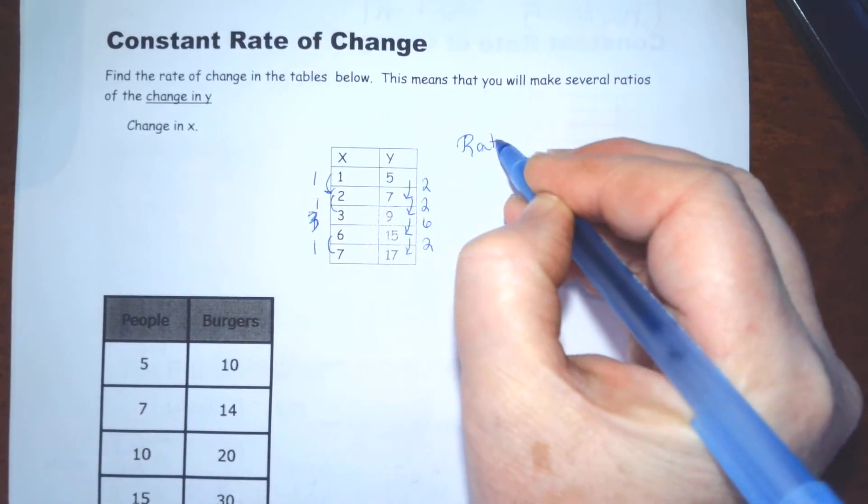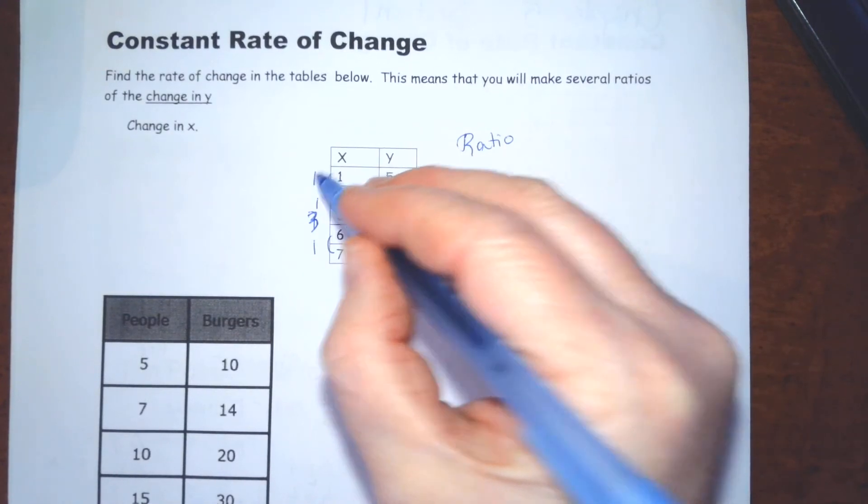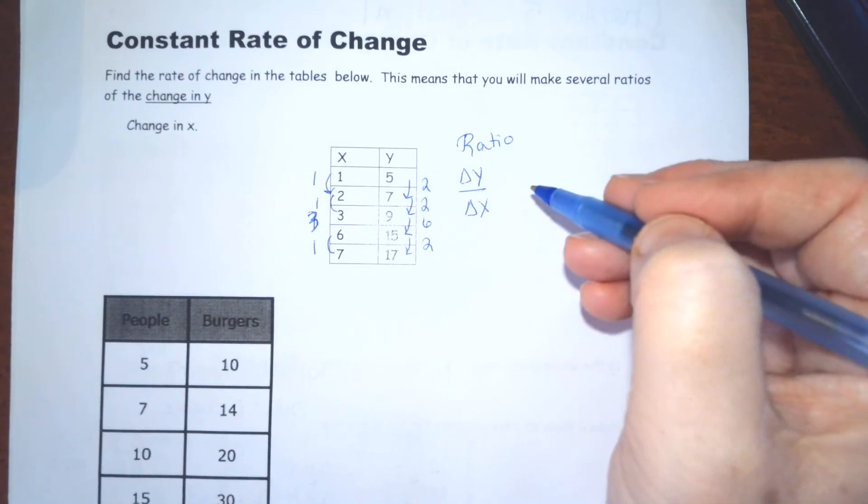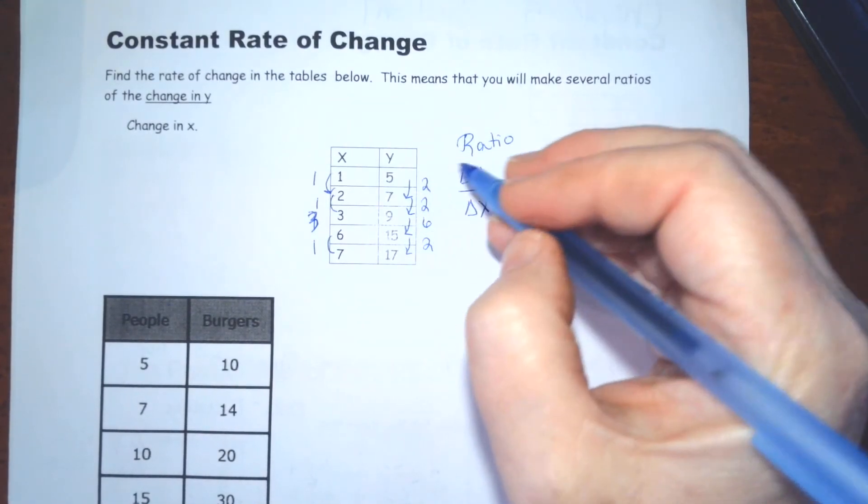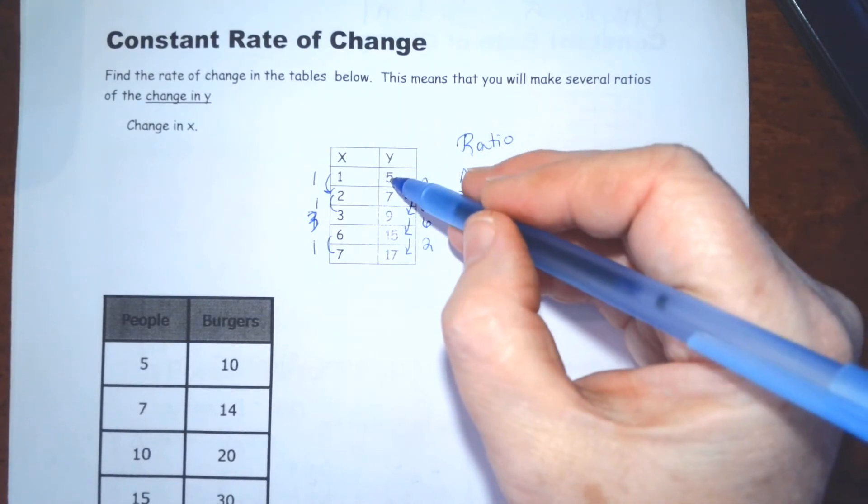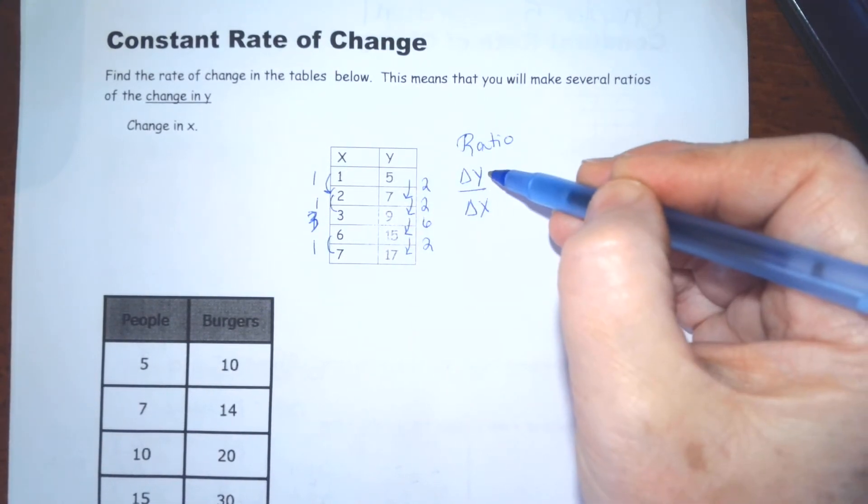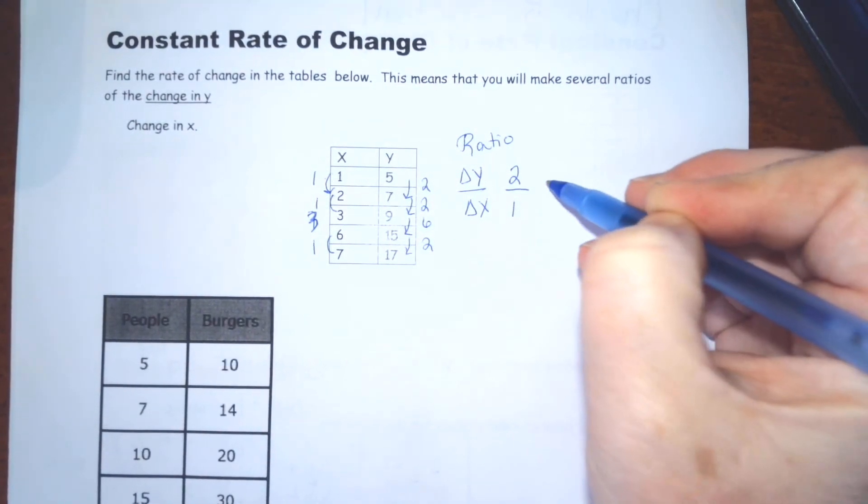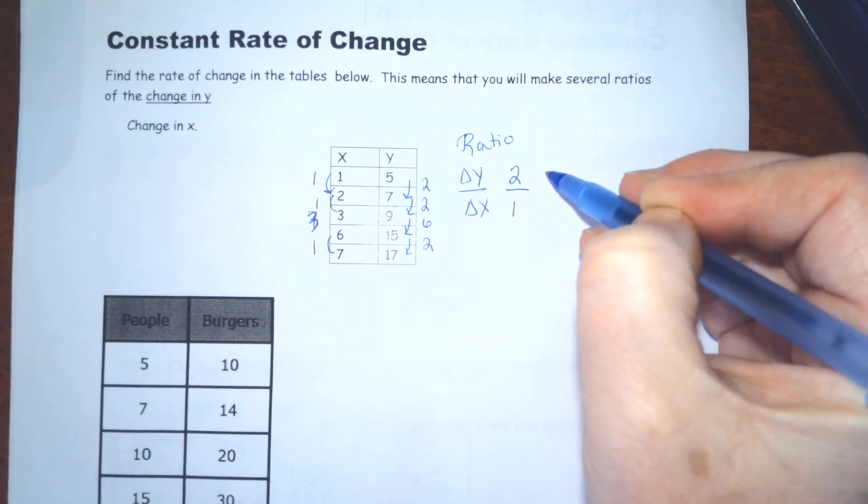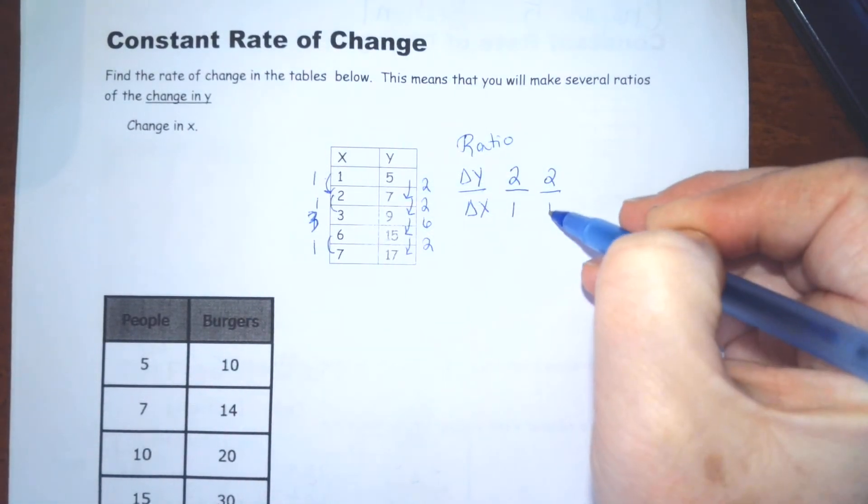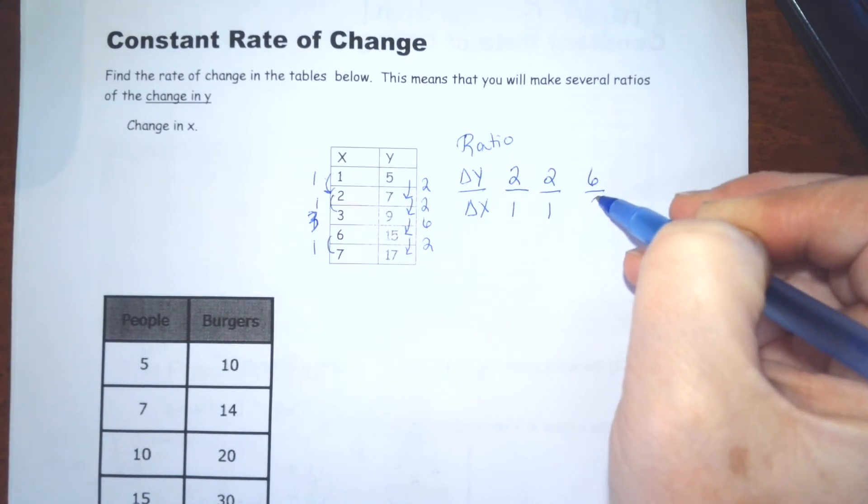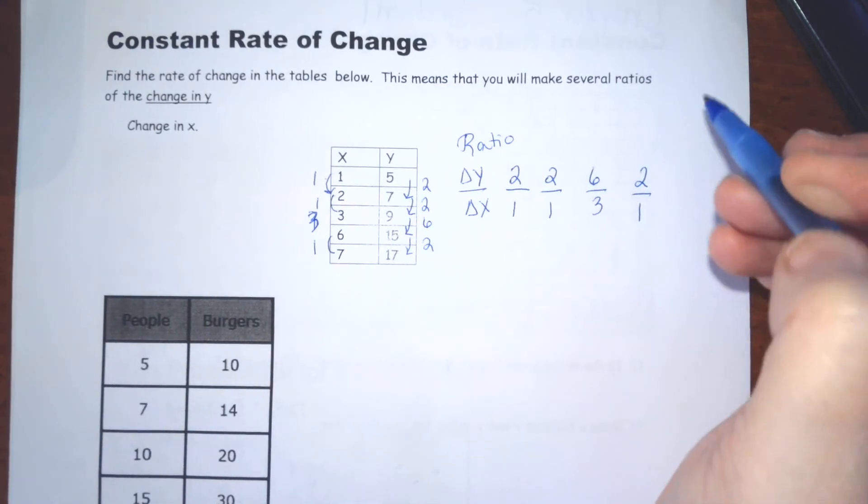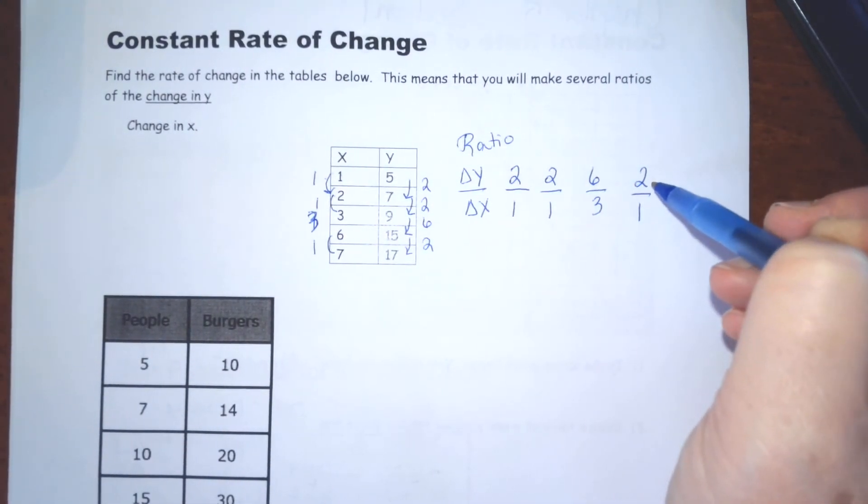Then, you need to build your ratios. 2 over 1. Because we want the change in y over the change in x for each level in my table. Now, I'm not using the y value over the x value. I'm using the change in y, which was 2, over the change in x, which was 1. And the next one is 2 over 1. And then, 6 over 3. And then, 2 over 1.